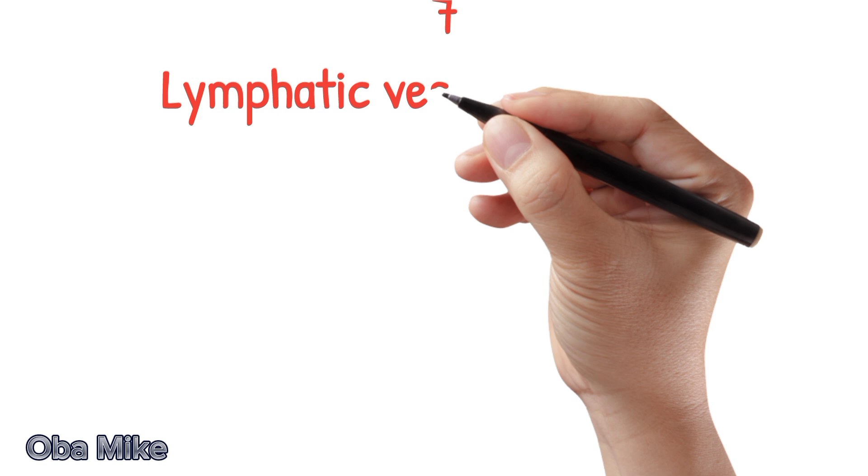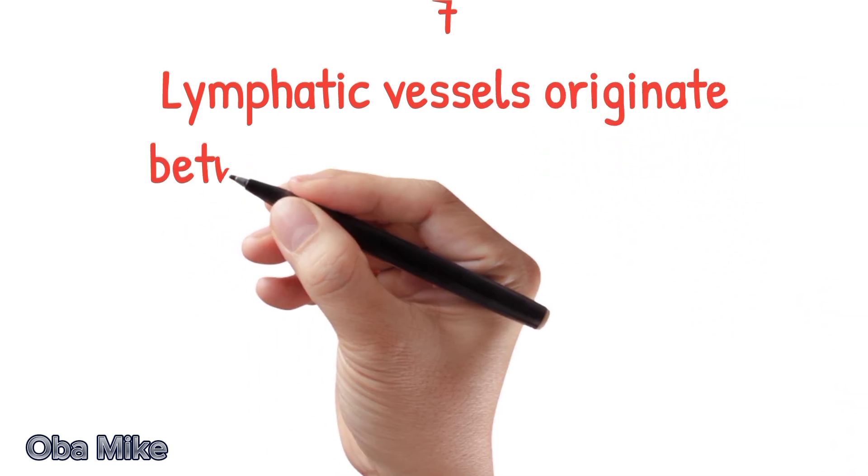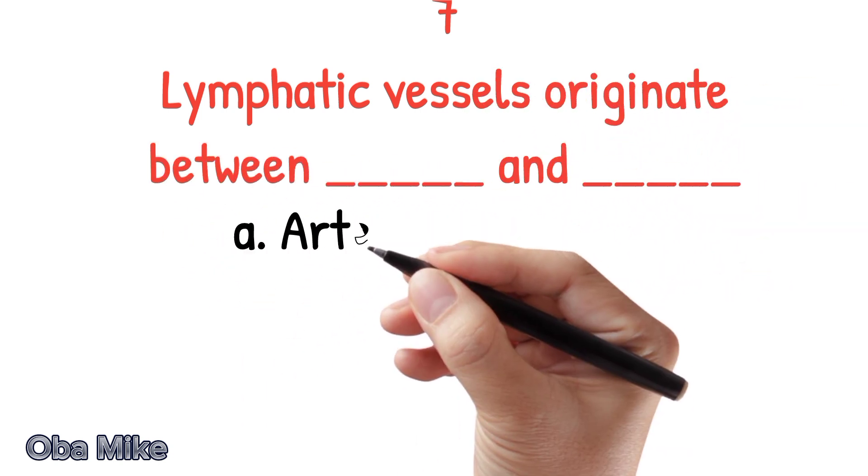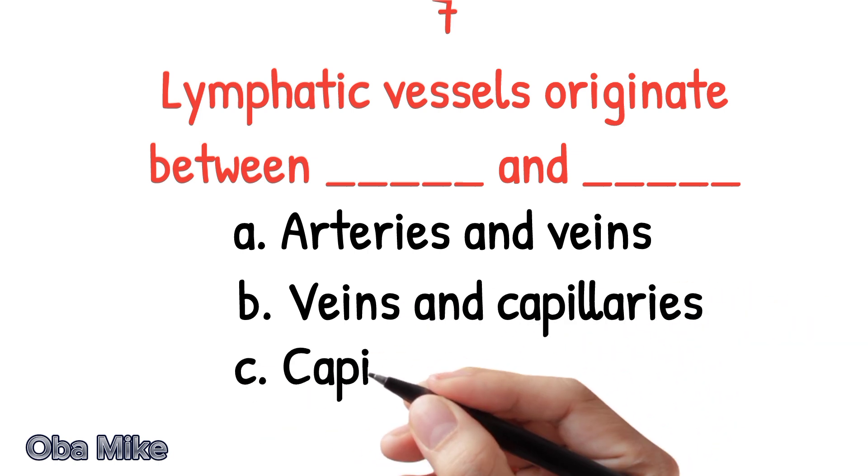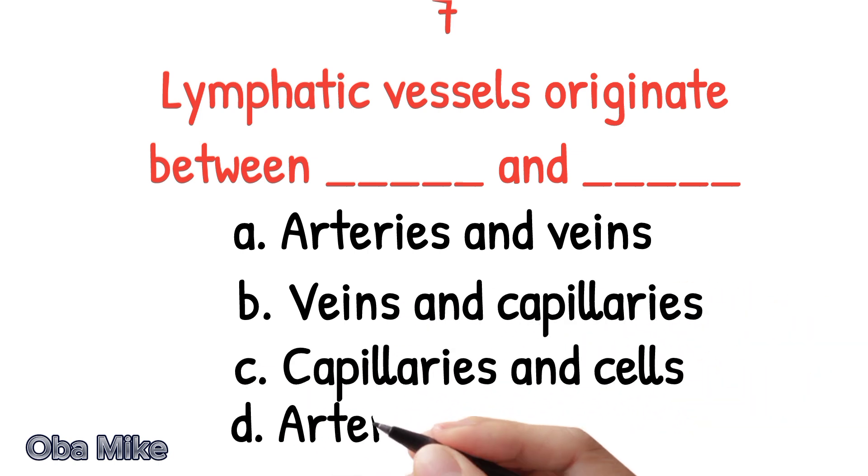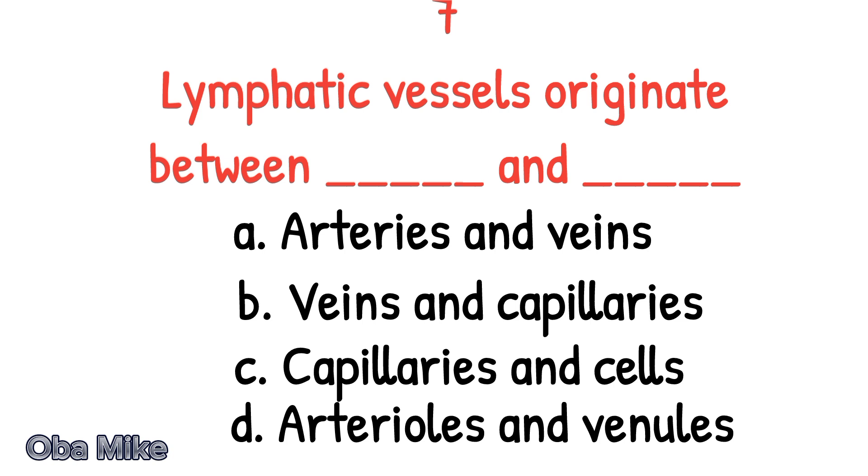Number 7. Lymphatic vessels originate between dash and dash. A. Arteries and veins. B. Veins and capillaries. C. Capillaries and cells. D. Arterioles and venules.